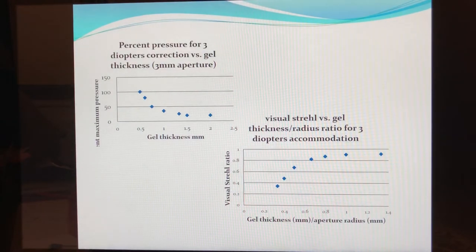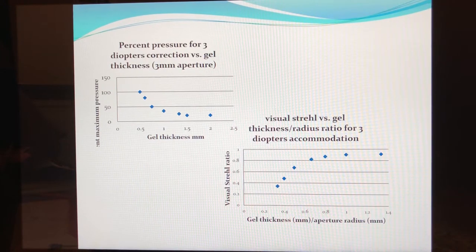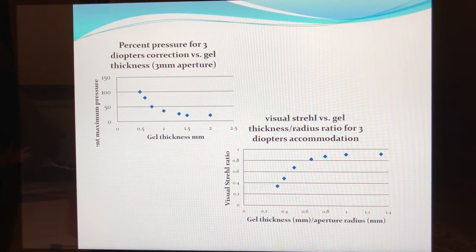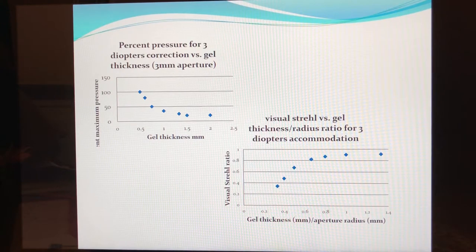We then literally run thousands of iterations to produce functions relating the input parameters of dimensional analysis, mechanical properties, and optical properties of the design to our output measures of actuation force and visual quality measured by the Strehl ratio. Shown here are two such functions: gel thickness versus the amount of force required, and the visual Strehl ratio with respect to a ratio of the gel thickness to aperture radius.